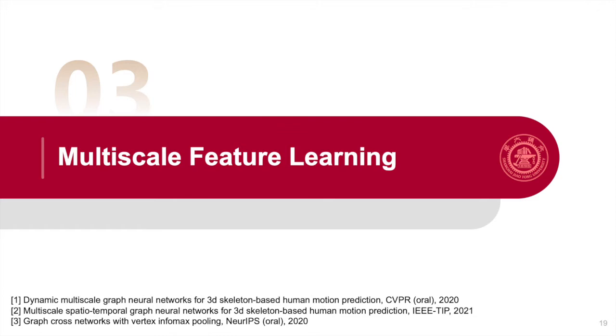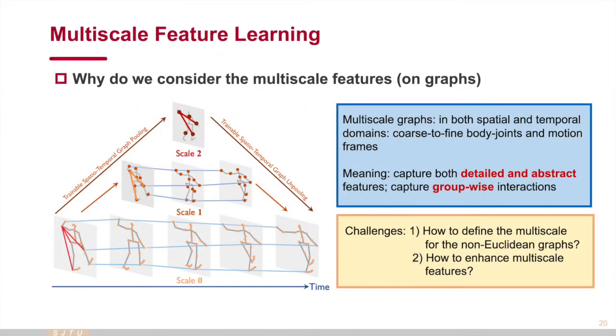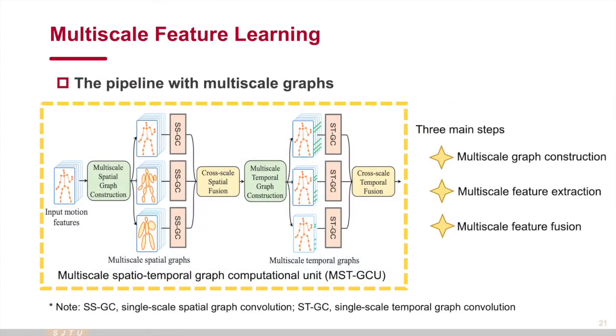The next work is multiscale feature learning. In image processing, multiscale modeling proves the effectiveness to obtain scale invariant, comprehensive, and important features. In spatial-temporal data, such as skeleton-based motion action prediction tasks, we also consider this idea, deriving both detailed and abstract information, as well as flexibly capturing group-wise interactions beyond the simple pair-wise relations. In this work, we decompose the spatial-temporal graph as a spatial graph and a temporal graph. On these two graphs respectively, there are three main operations: multiscale graph construction, multiscale feature extraction, and cross-scale feature fusion.